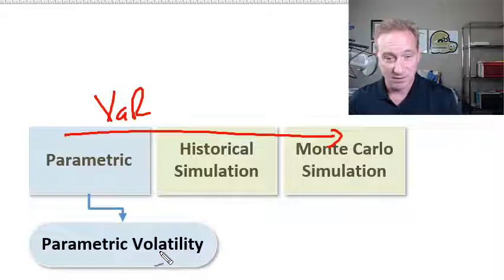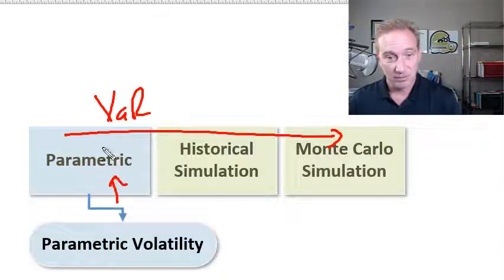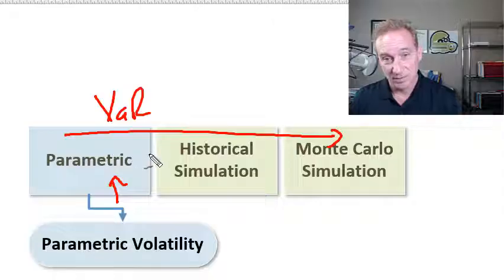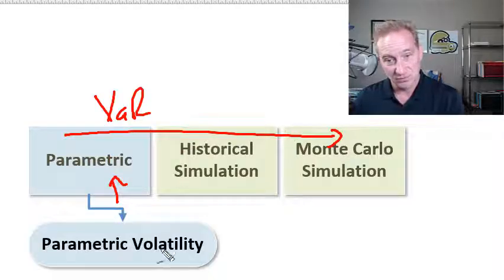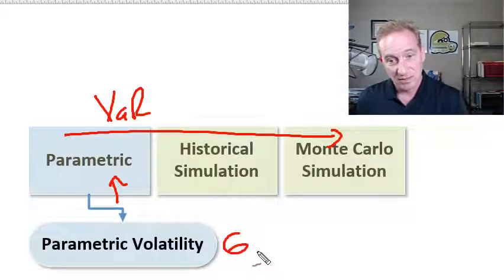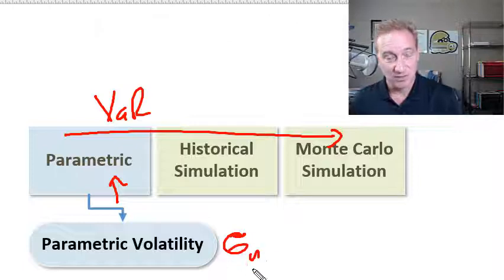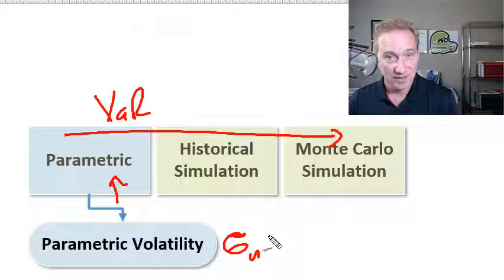Specifically, volatility is the parameter that plays a role in the parametric approach, but that's only one of the three approaches. The key question is, how do we estimate today's volatility?